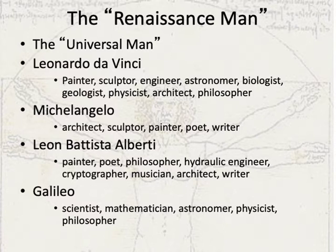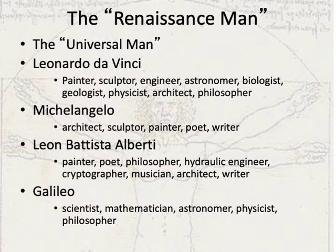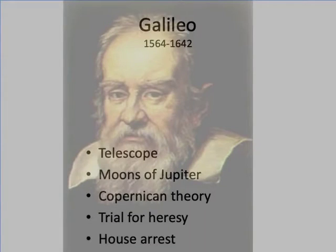Michelangelo, the sculptor of David and painter of the Sistine Chapel, was also an excellent architect as well as a gifted poet and writer. Galileo Galilei made significant contributions across a wide cross-section of physical sciences, including astronomy, physics, and materials science. Galileo standardized and documented his experimental processes so that other scientists could replicate his experiments, and wrote voluminously on scientific topics all his life. He was a subscriber to the arguments of Copernicus, who had first introduced heliocentric theory — the idea that the earth revolves around the sun. Galileo's advocacy for these ideas ultimately led him into conflict with the Church, and one of the most famous conflicts between religion and science.